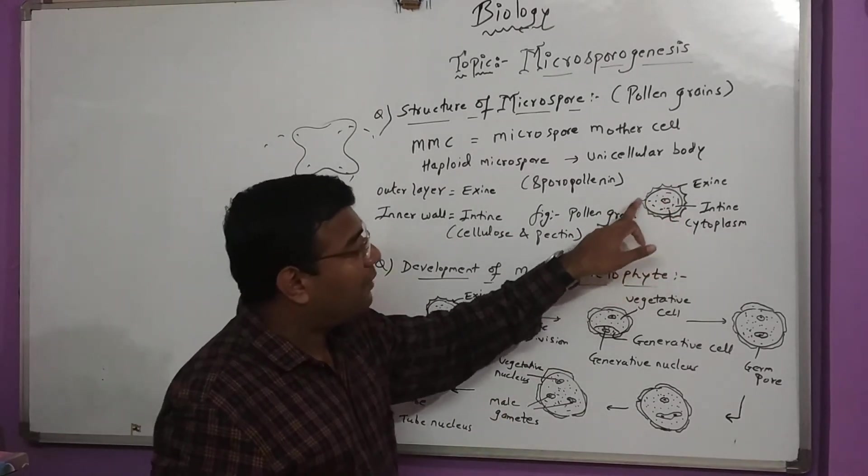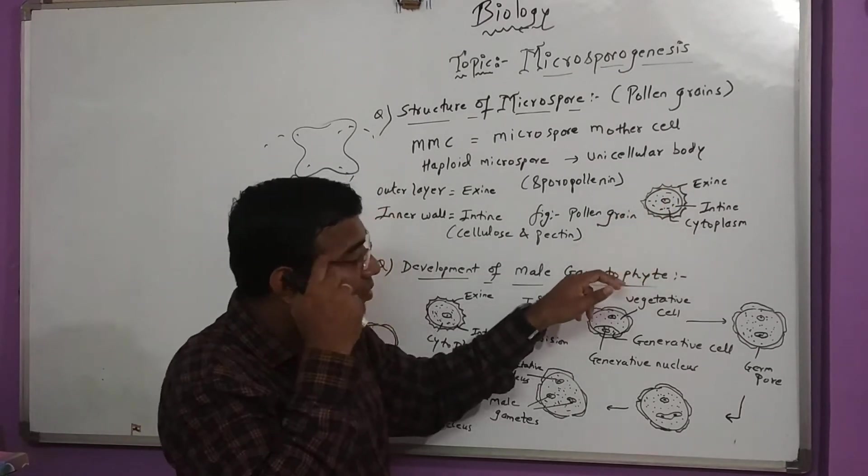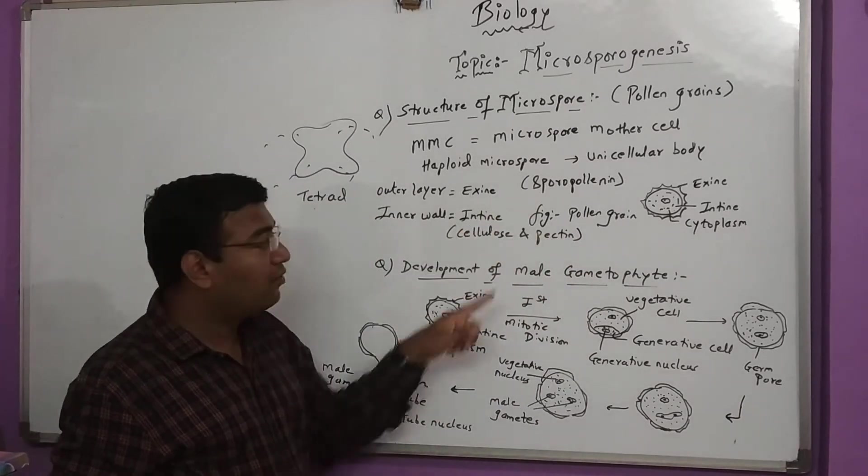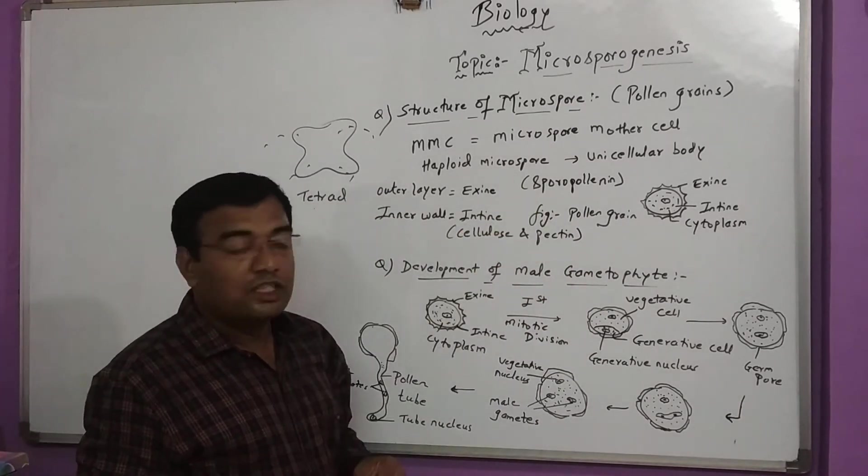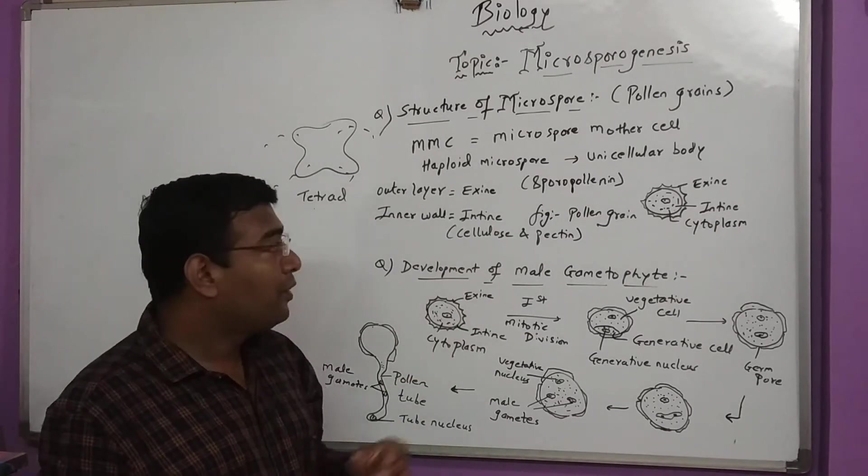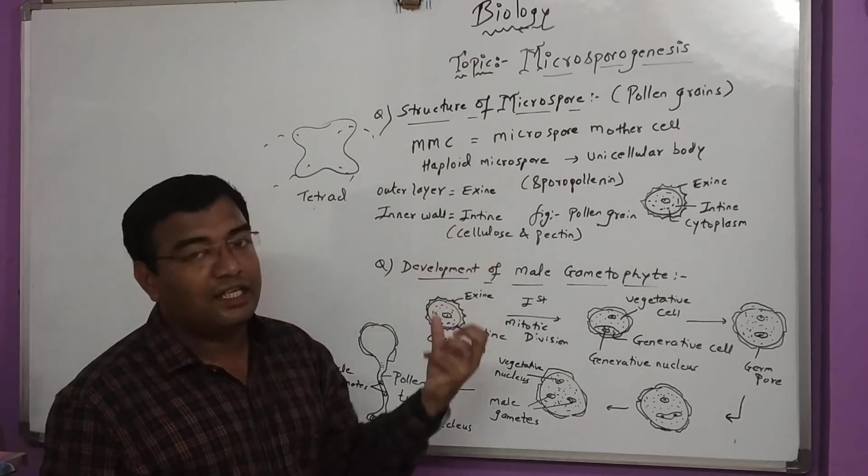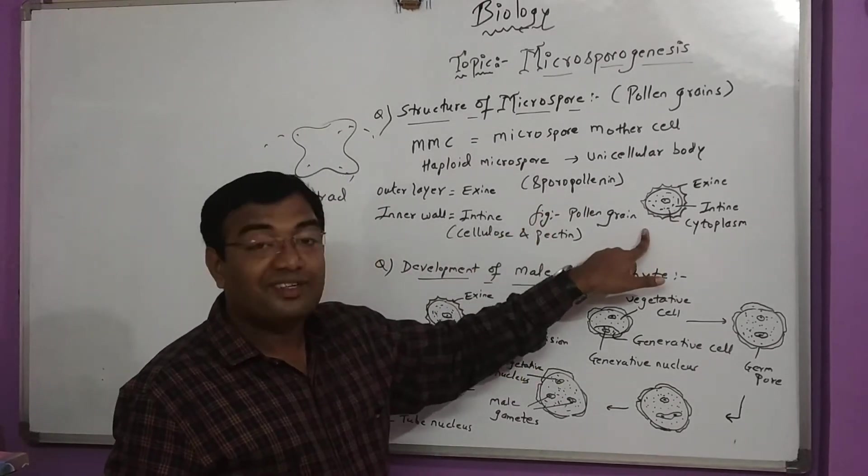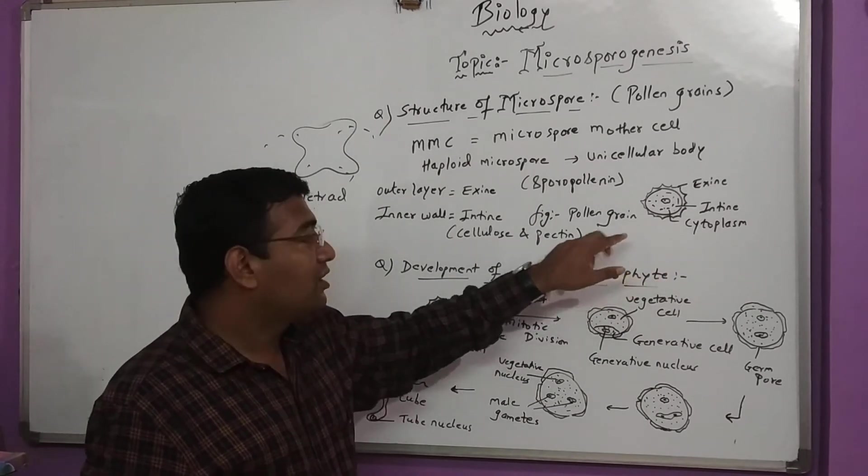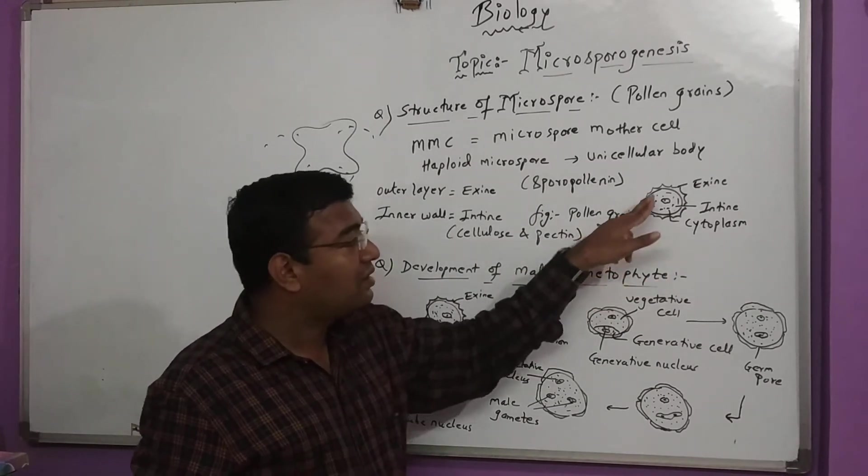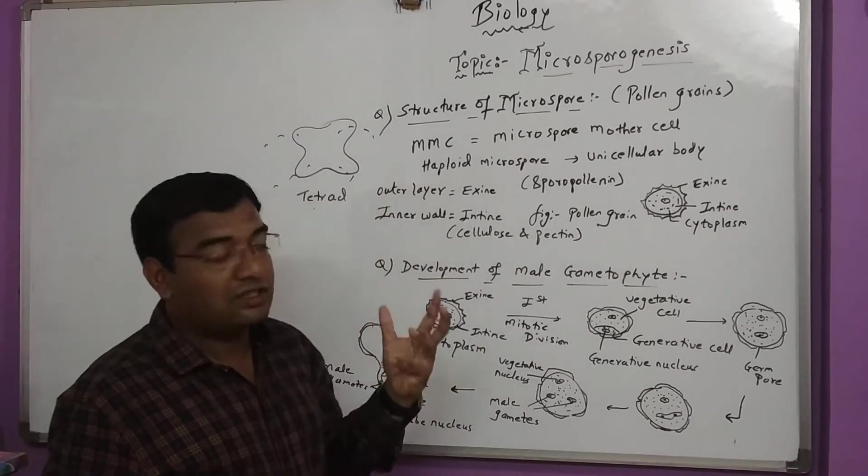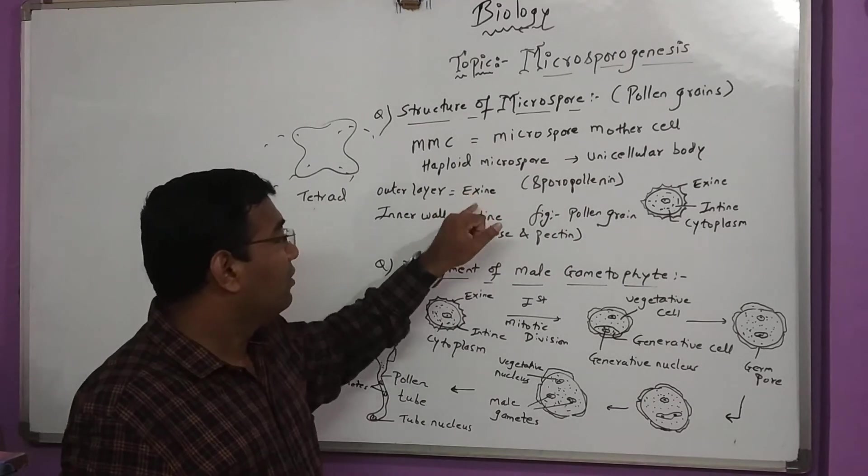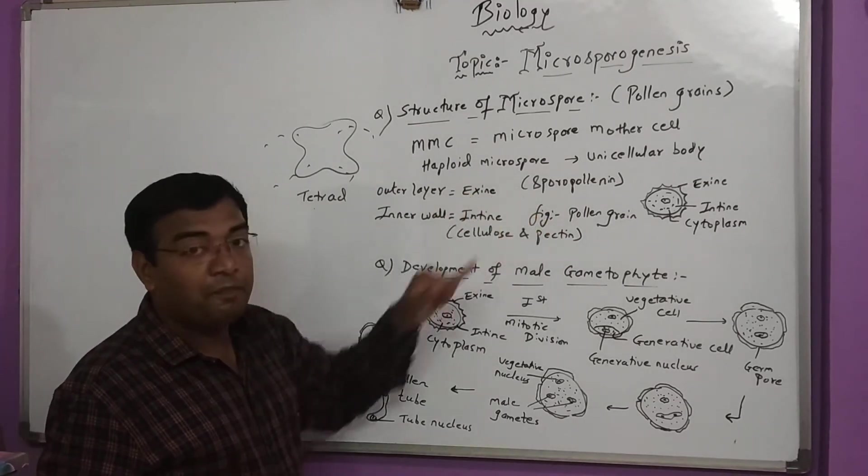You can see the spiky parts here. It can be smooth or rough. It is covered with sporopollenin. Sporopollenin is a non-biodegradable material that protects the internal nucleus and cytoplasm from external conditions and chemical effects.